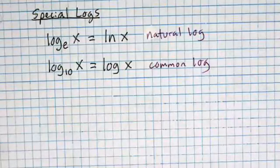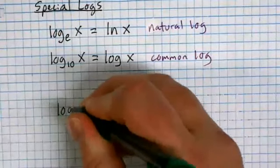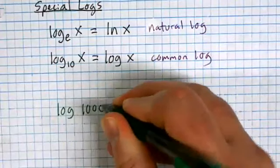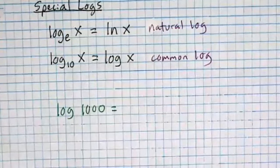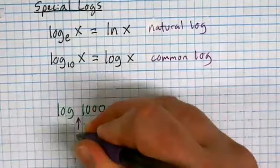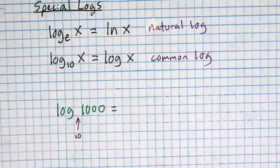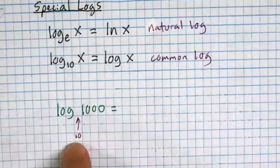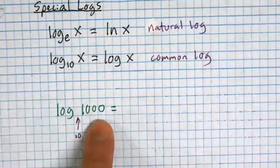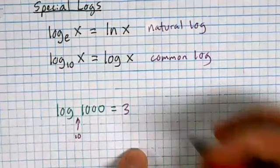We can apply our recent work to these. When you see something like log of 1000, my favorite approach is to remember there's a little invisible 10 as the base. Then I ask the same question: what is the exponent I could put onto a base of 10 to make it equal to 1000? The answer is three.